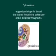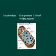The cytoskeleton provides support and shape for the cell. The chain fence in the locker room and all the poles throughout the locker room represent the cytoskeleton. The chain divides the locker room in half, and the poles are spread out throughout the whole locker room.